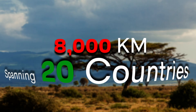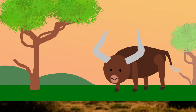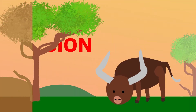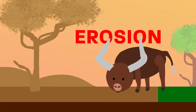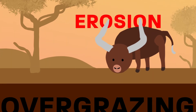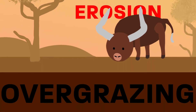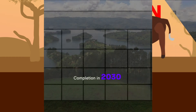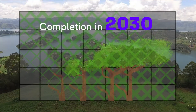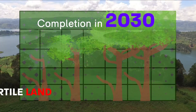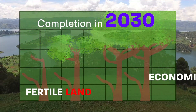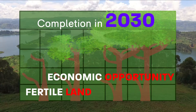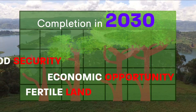This will aid the fight against social and economic problems that have risen due to erosion and overgrazing from goats and cattle as nomads wander the land. The full effect of the project will come to fruition by the year 2030, creating fertile lands, more economic opportunities, and better food security and climate resilience.